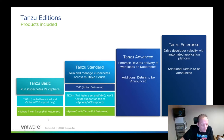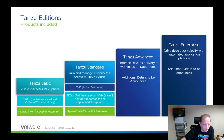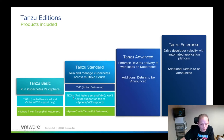Tanzu Standard adds a few features. Both Basic and Standard include TKGm, but Basic only supports running TKGm on vSphere, whereas Tanzu Standard supports deploying TKGm on VMware Cloud on AWS, natively on AWS, and on Azure. As additional cloud provider support is added, you'll see that reflected here.